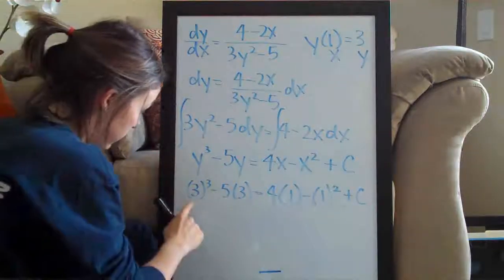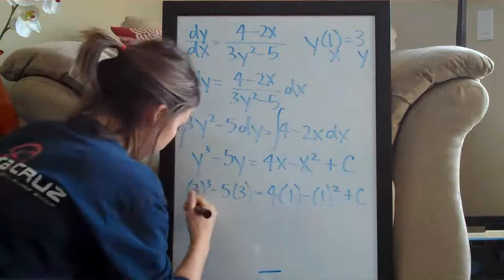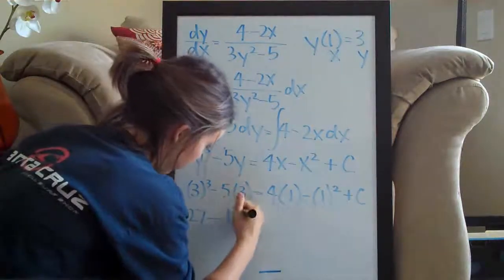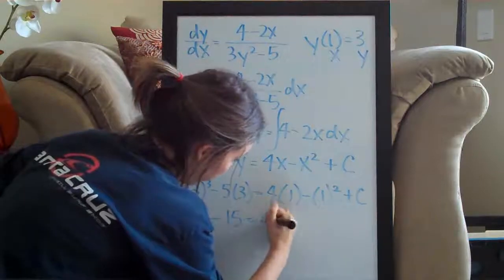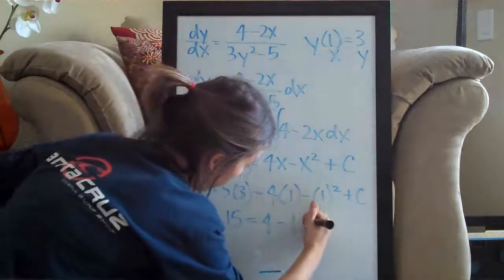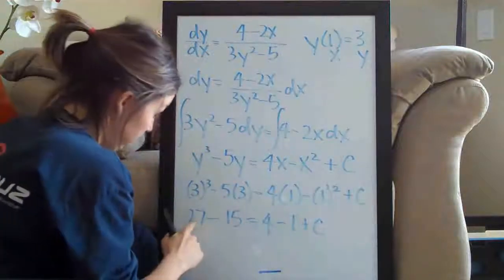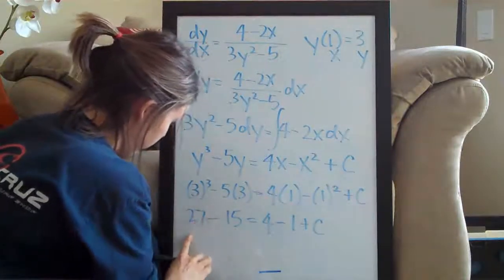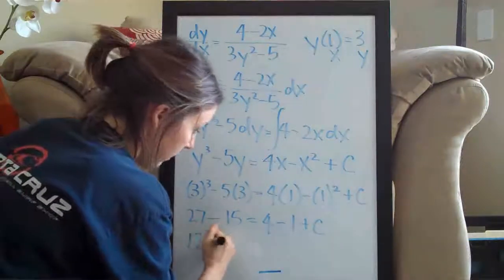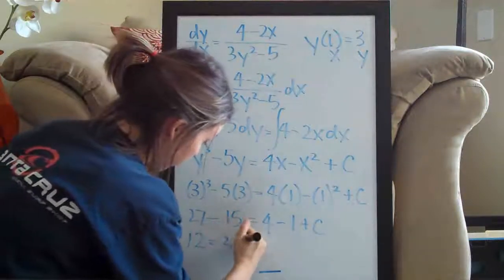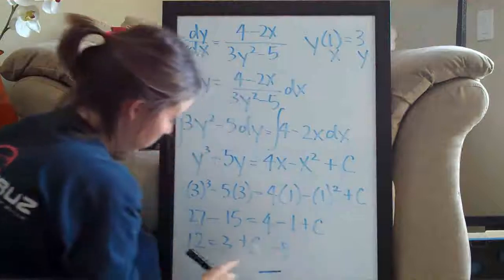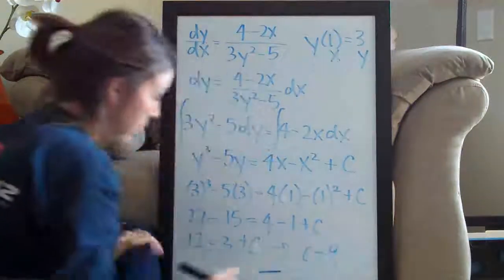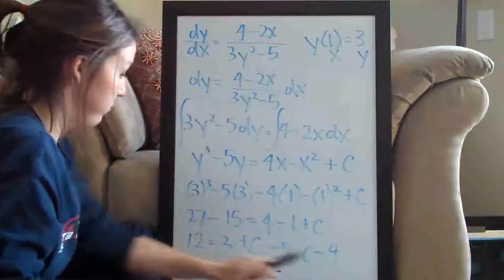So let's see, 3 cubed is 27 minus 5 times 3 which is 15 equals 4 minus 1 plus c. So that leaves us with 12 equals 3 plus c so c is going to be 9. So we solved for c and we got 9.